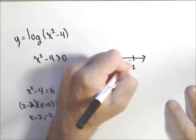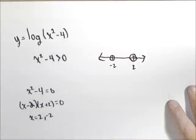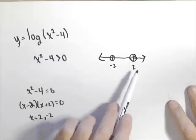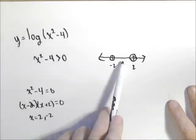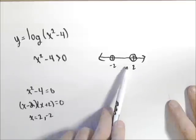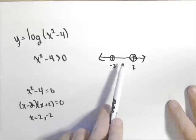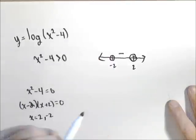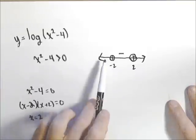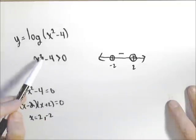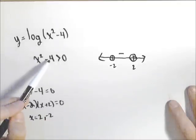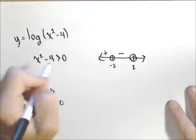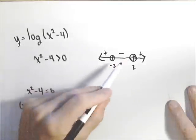We do not want to include those zero values since log of zero is undefined. I'll make a number line and pick test points to determine where the function is positive or negative. If I use zero (between negative two and two), zero squared minus four is negative, so the function is negative between negative two and two. Picking negative three to the left: nine minus four is positive. Picking positive three to the right also gives a positive number. So the function is positive outside the interval from negative two to two.